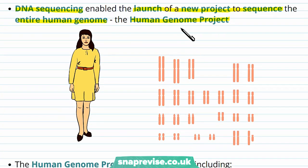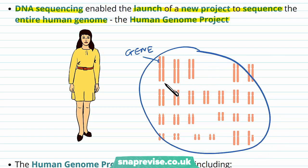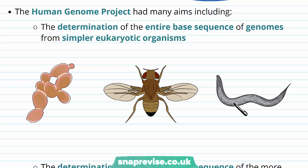Remember that a gene and the genome are two different things. One gene would be a section of DNA that codes for a particular protein. But the genome is all the genes and all of the DNA within a particular organism — this is what our genome looks like. The Human Genome Project wanted to work out the entire sequence of the entire human genome.